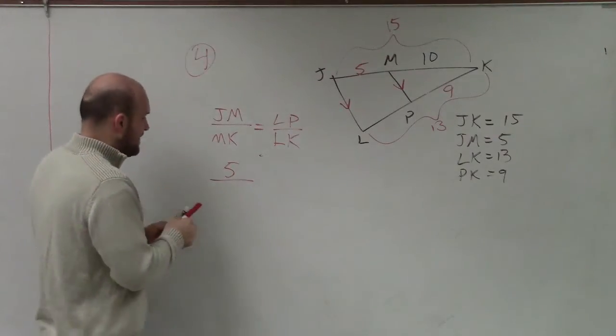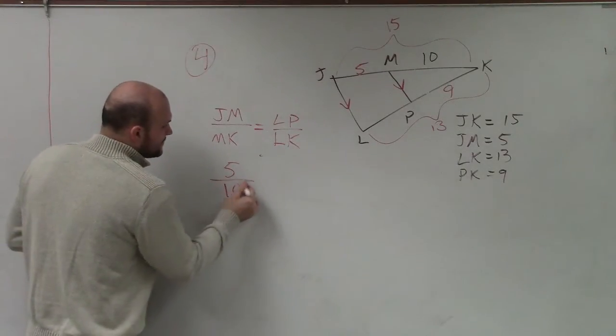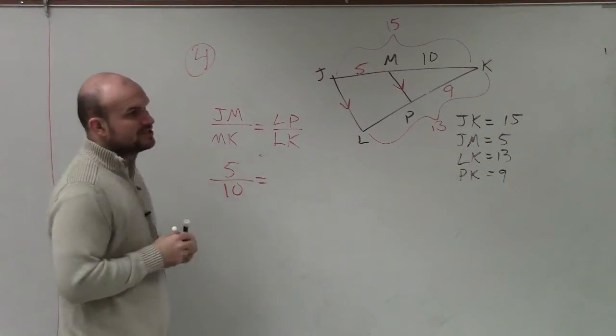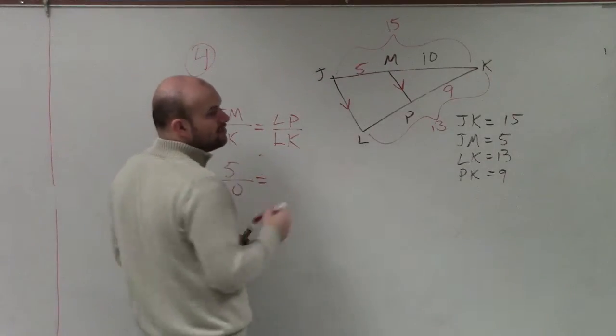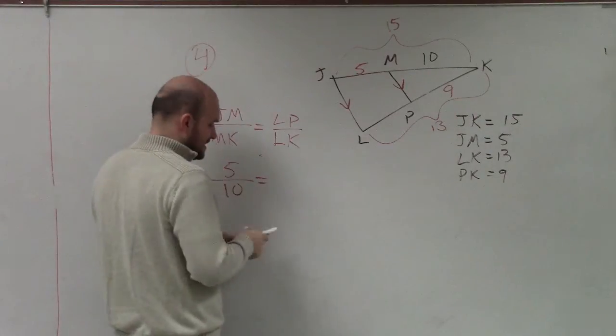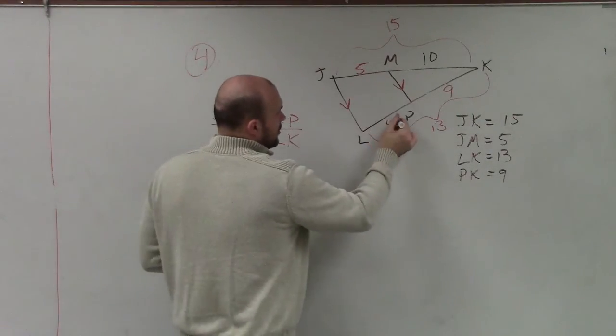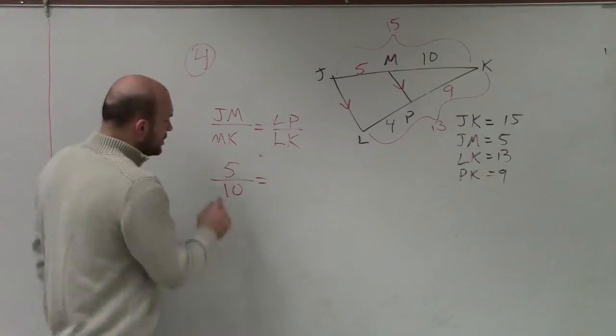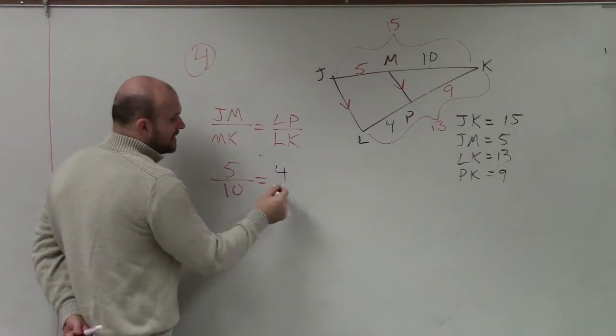So now I can say 5 is to 10, which is equal to LP. We don't know what LP is, but we know that LK is 13 and PK is 9, so then LP has to be 4. So 5 is to 10 as 4 is to 9.